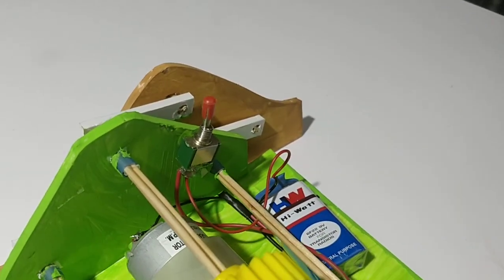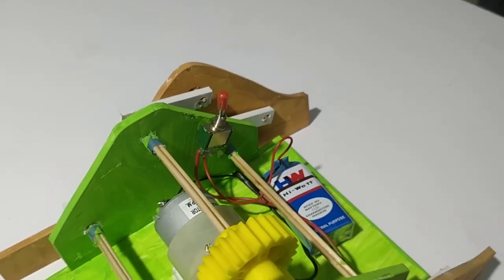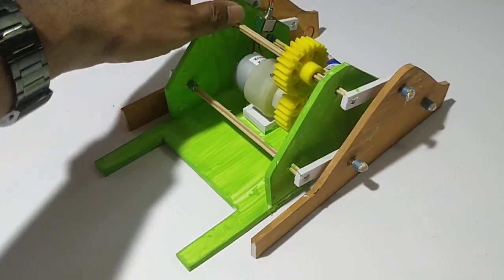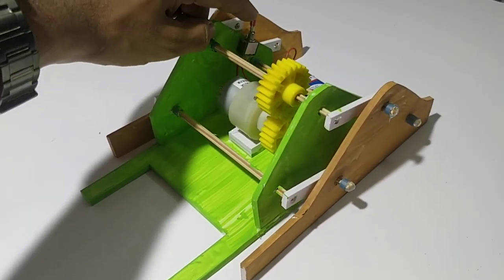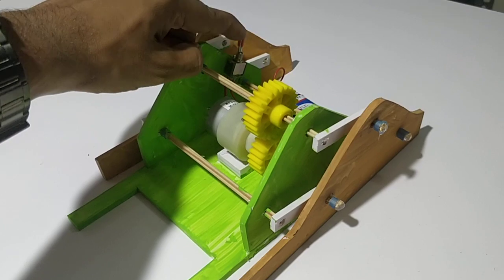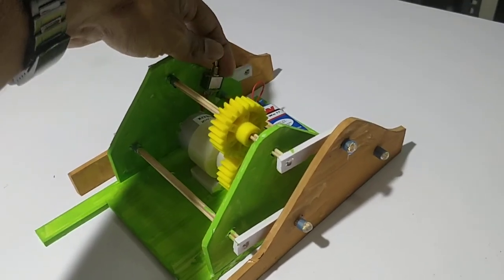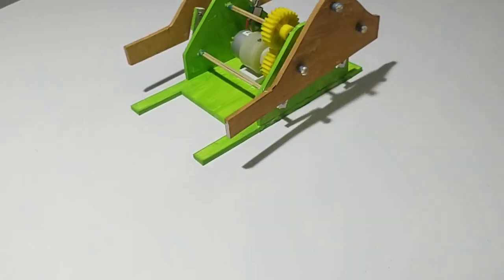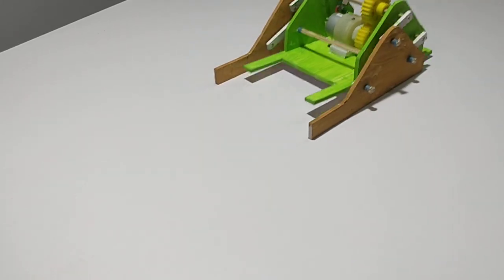By switching on this switch, the robot starts walking. So I am switching the power supply. Now you can see how it is walking.